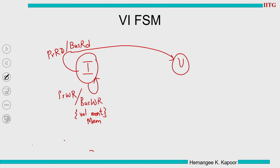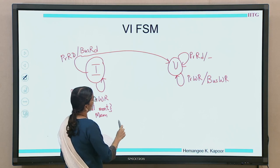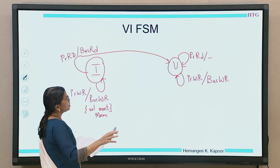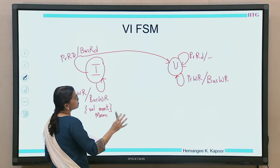In the valid state, we came here because of a processor read. Subsequent processor reads will stay in the same state and we do not need any bus transaction because this is a local hit. What happens if there is a processor write in the valid state? We remain in the valid state but we also need to send the new value onto the bus using a bus write transaction because this is a write-through cache. When another cache wants to read, we do not change anything — multiple readers are allowed.